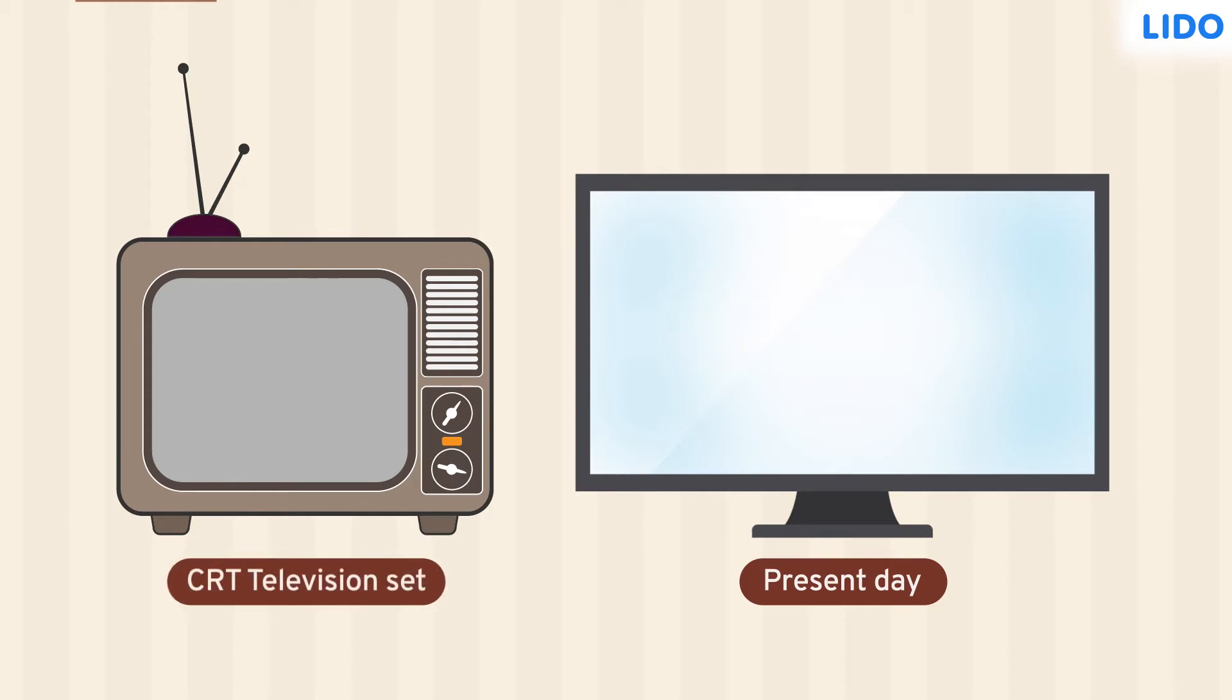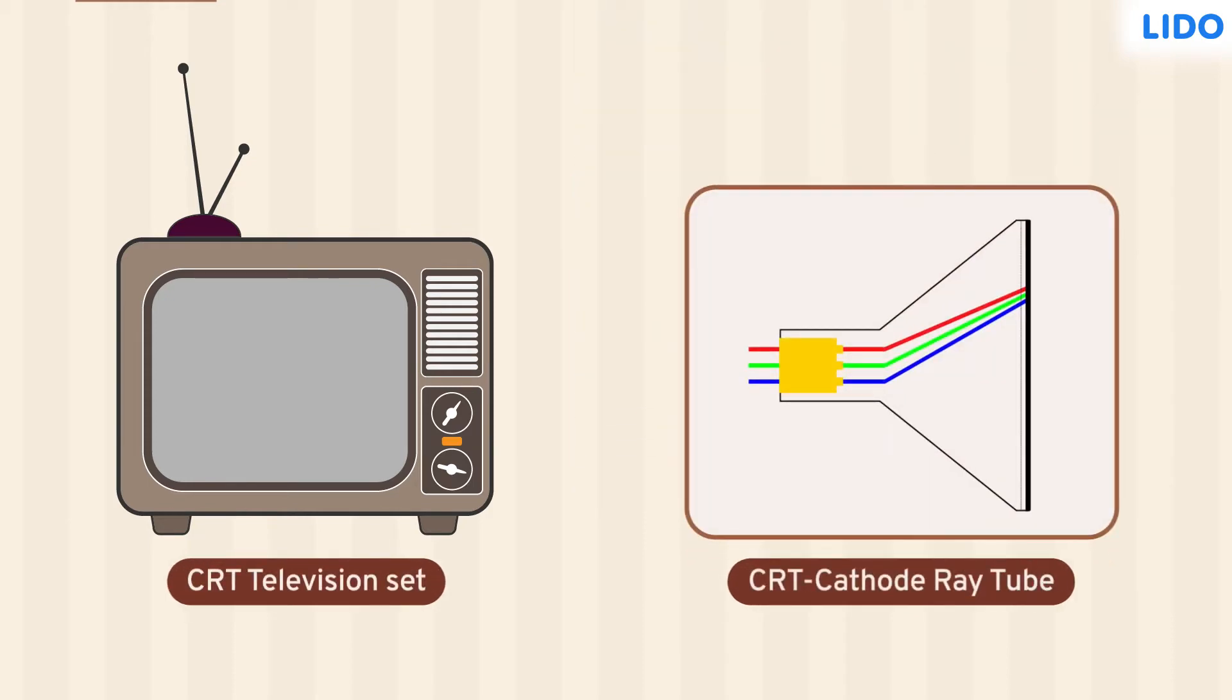The television sets then had a box-like structure and were called CRT television sets. CRT stands for cathode ray tube, which was used to display images on the screen.